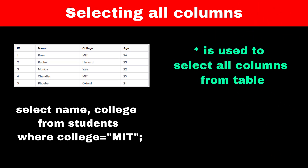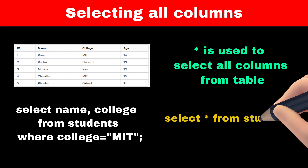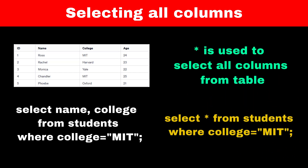Star represents all the columns of our table. So the new query becomes: SELECT * FROM students WHERE college = 'MIT'. This query will return data of all the columns where the student's college is MIT.